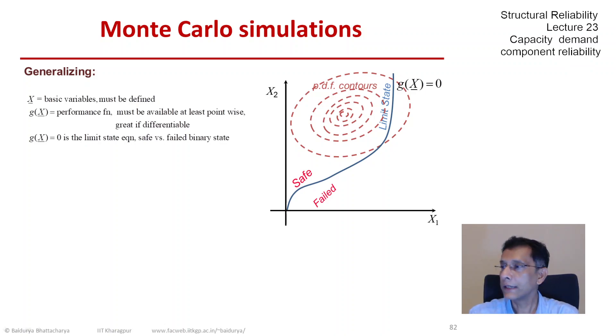And on the right, you see on the two dimensional space of x1 and x2, how this g of x can split the domain into safe and failed or unsafe regions. So when we compute failure probability, what we essentially do is estimate the probability content of that failed subset.